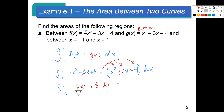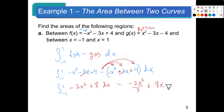We're going to integrate. Negative 2x squared becomes negative 2x to the third over 3 — we add 1 to the exponent and divide by that new exponent. 8 becomes plus 8x. These are our integrated values, and we're going from negative 1 to positive 1. We're going to use the Fundamental Theorem of Calculus: plug in 1 first, then subtract the value we get when we plug in negative 1.